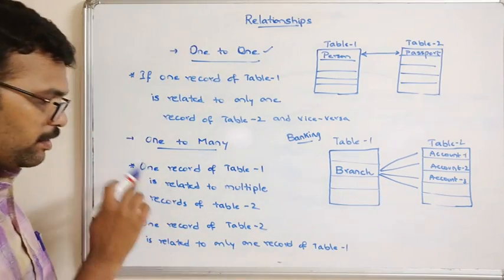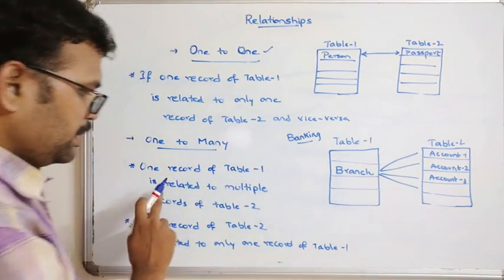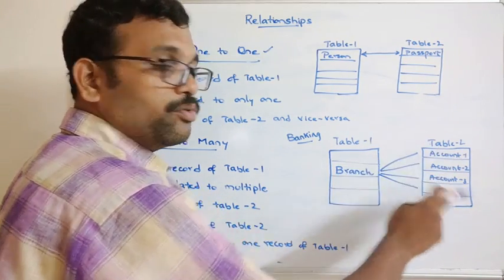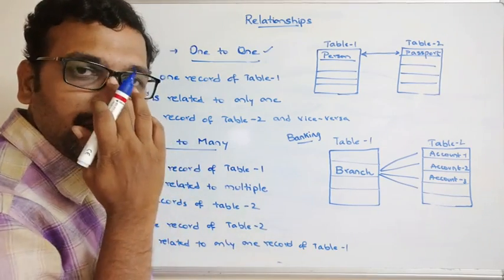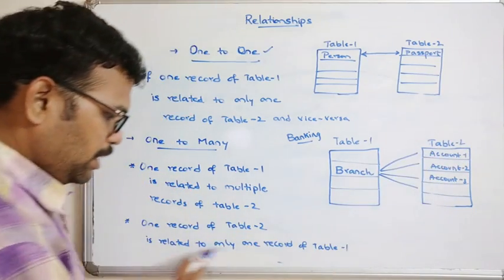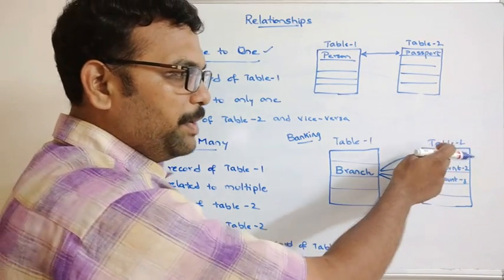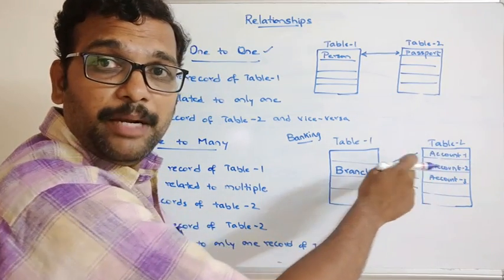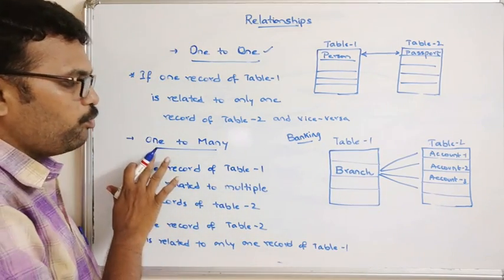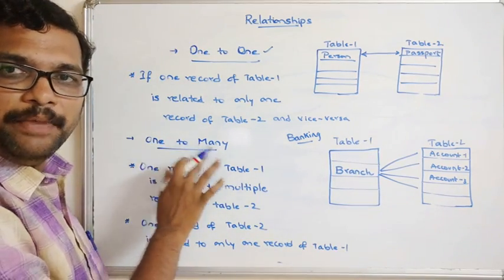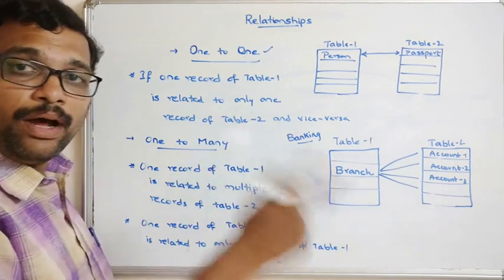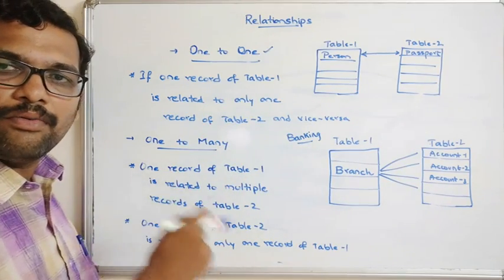So one record of table one, that means a branch, is related to multiple records of table two. One branch is managing different accounts — multiple accounts, multiple users. Similarly, one record of table two, that means one account, is related to only one record of table one — it will be managed by a single branch, not multiple branches. This type of relationship we call one-to-many.